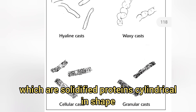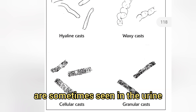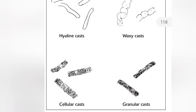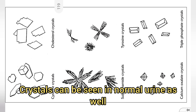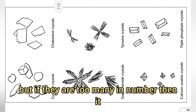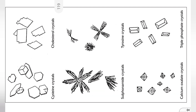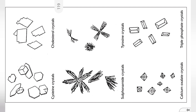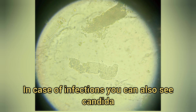Casts are solidified proteins, cylindrical in shape, and you can see them at 10x as well. They are sometimes seen in urine, and if you can identify them, that is very good. Crystals can be seen in normal urine as well, but if they are too many in number, it might indicate some kind of pathology that the doctor can correlate with clinical findings — like stones or metabolic disorders.